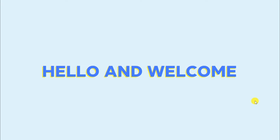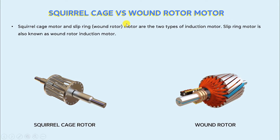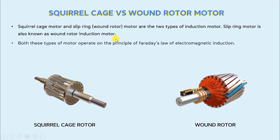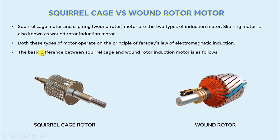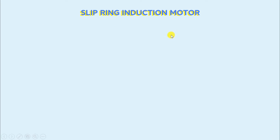Hello and welcome to my YouTube channel. In this video, we will talk about the main difference between squirrel cage and slip ring induction motors. Squirrel cage and slip ring motors are the two types of induction motor. Slip ring motor is also known as wound rotor induction motor. One similarity between both types is that they operate on the principle of Faraday's law of electromagnetic induction. Now let's discuss the basic difference between squirrel cage and wound rotor induction motor in detail.